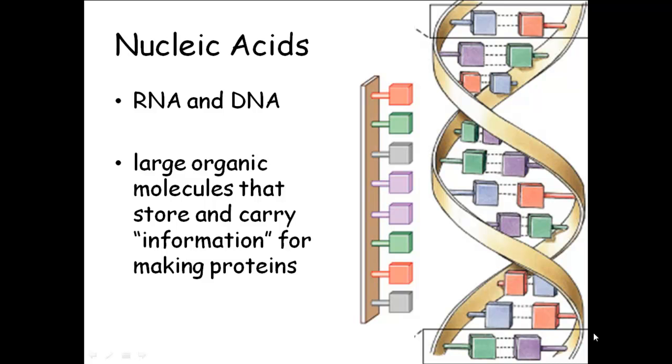Amino acids make up proteins. So if you put amino acids together, you get proteins. If you put something called a nucleotide together, you get DNA or RNA. So nucleic acids are made out of nucleotides. Proteins are made out of amino acids.